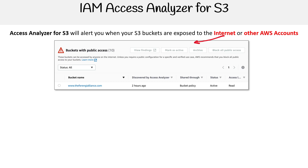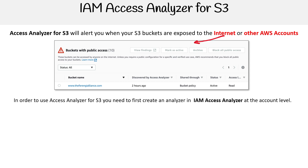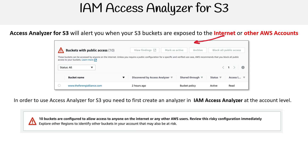So the idea is that when the service is running, it's going to tell you. There's an example of a bucket that has a bucket policy, and it's telling me if it's active and what can be done with it. In order to use the Access Analyzer for S3, you need to first create an analyzer in IAM Access Analyzer at the account level.